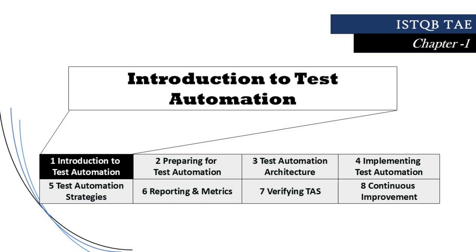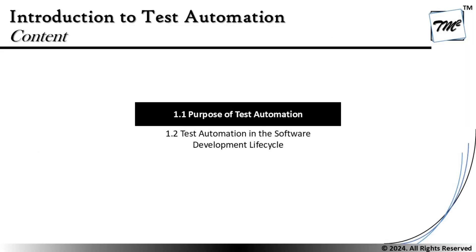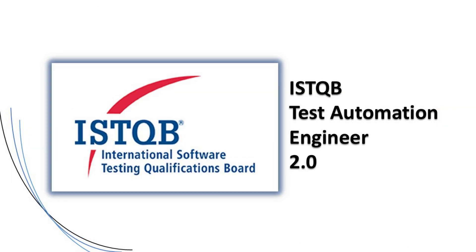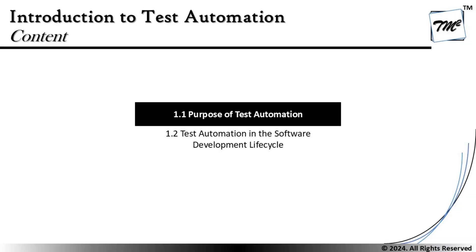Hello friends and greetings for the day. Welcome back to another tutorial on ISTQB Test Automation Engineer Certification. We are getting started with Chapter 1 today and shall be looking at the very first topic of this particular chapter — topic 1.1, the purpose of test automation. We'll understand the key objectives of automation and the advantages and disadvantages. So let's get started.